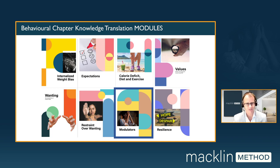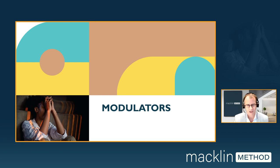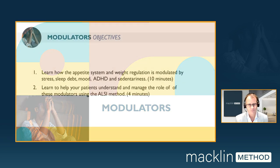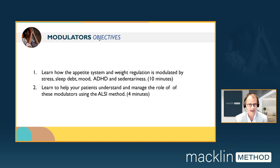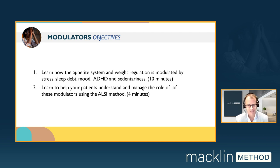Today's module is the seventh module of eight, called the modulators module. Our objectives are as follows. First, for about 10 minutes, you will learn about how the appetite system is modulated by this short list of internal states: stress, sleep debt, mood, ADHD, and sedentariness. We will then close with approximately four minutes where you will learn how to help your patients understand and manage these modulators through the ALSI method — asking, listening, summarizing, and inviting and informing.